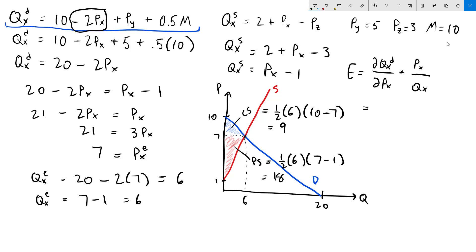That means the derivative of the rest of this is just zero. And so we just take the derivative of negative 2Px with respect to Px, which of course is negative 2. Multiply that by Px over Qx.